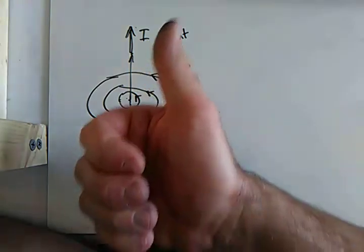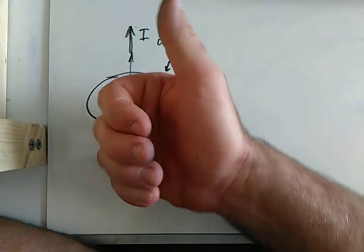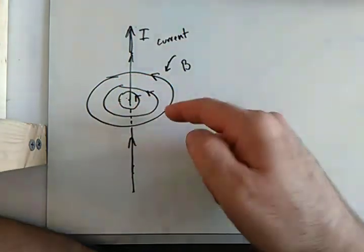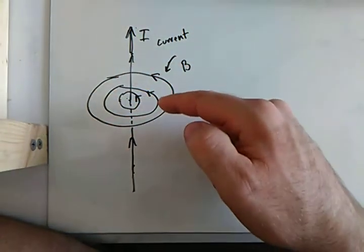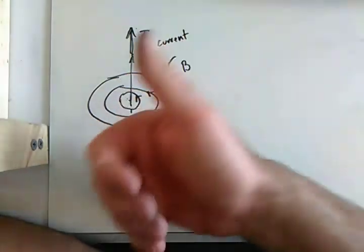Here's my picture here. If I go and I twist my hand like this, the curved finger shows the direction of that B field or the magnetic field.